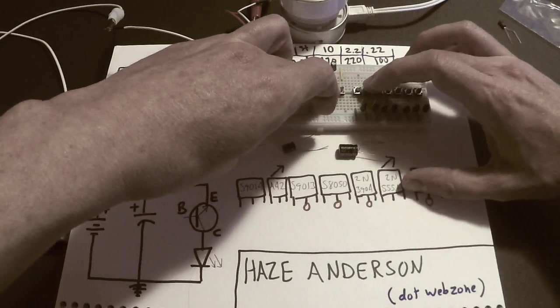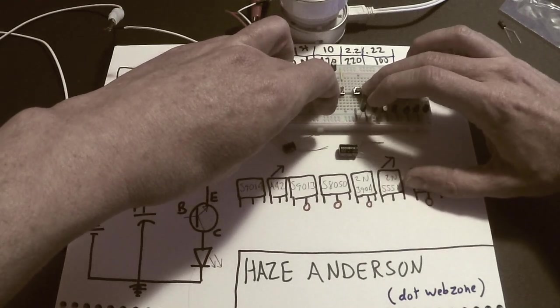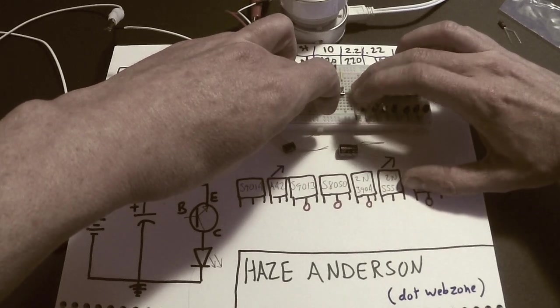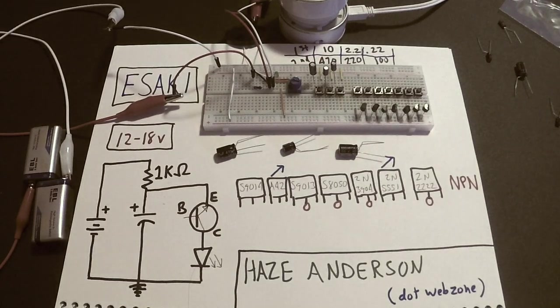Pretty cool huh? But the A42? Nothing. The S9014? Nothing. What does this mean?